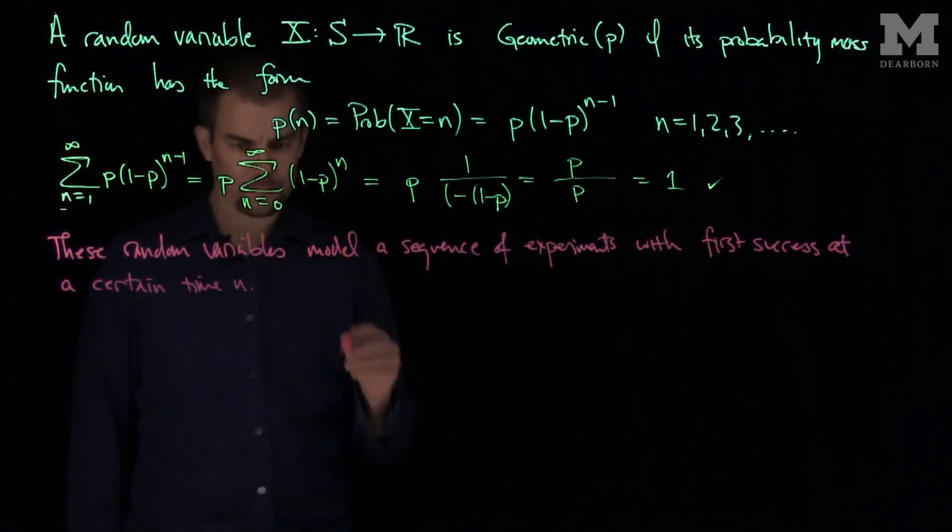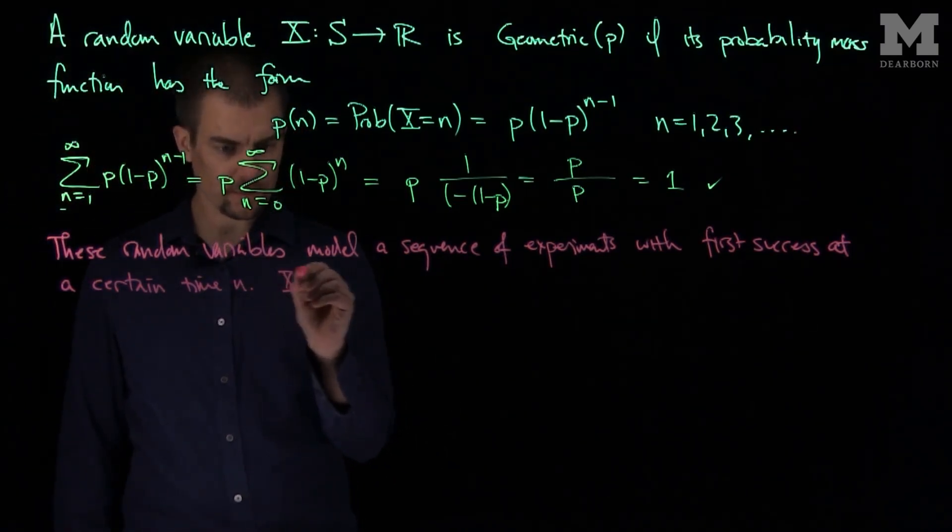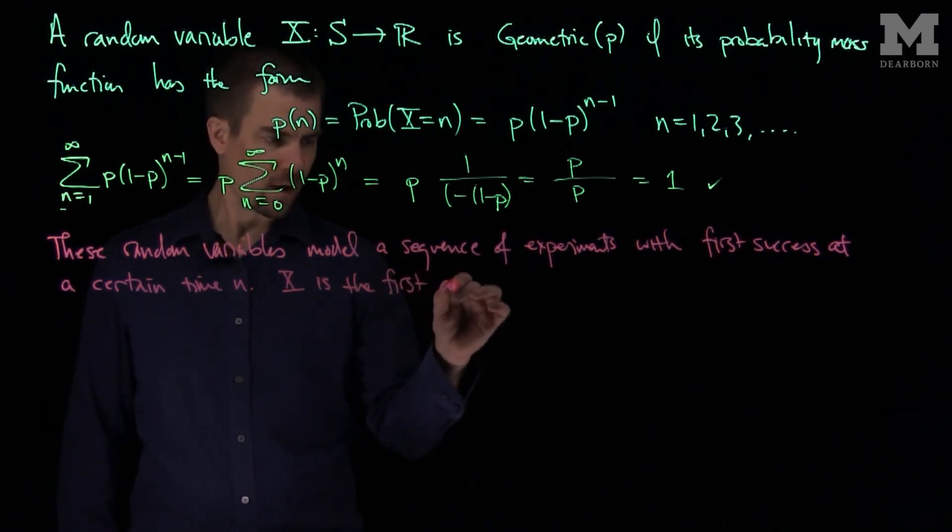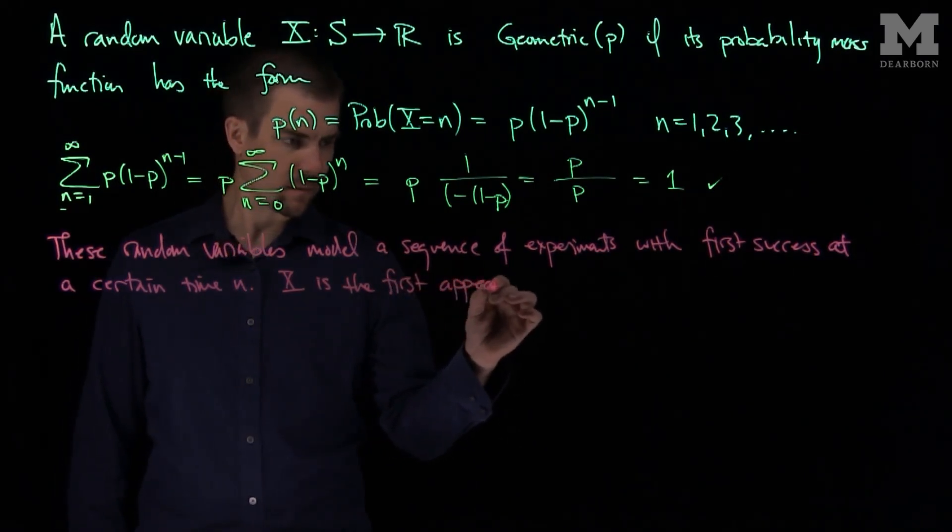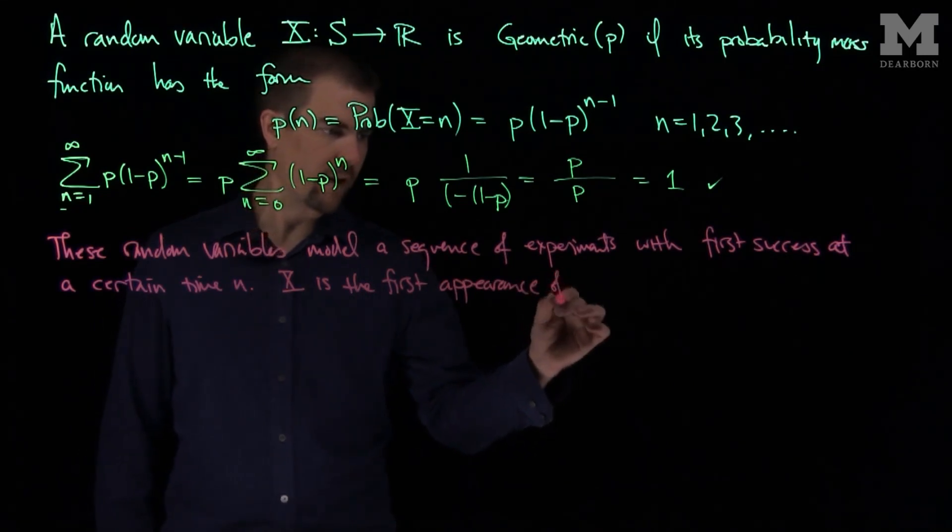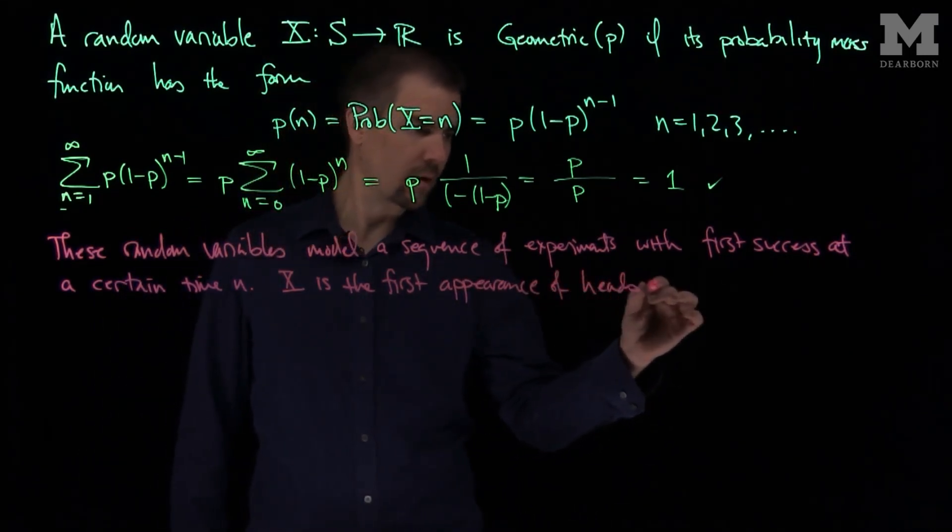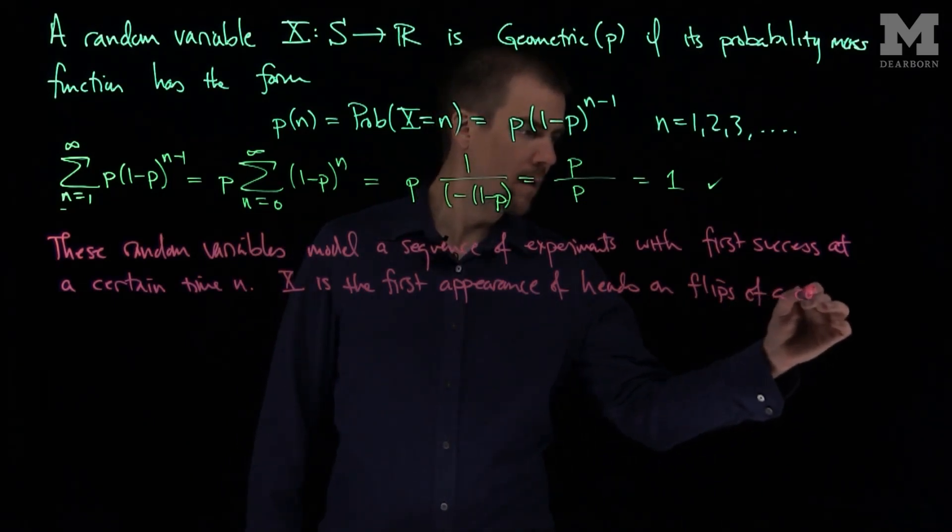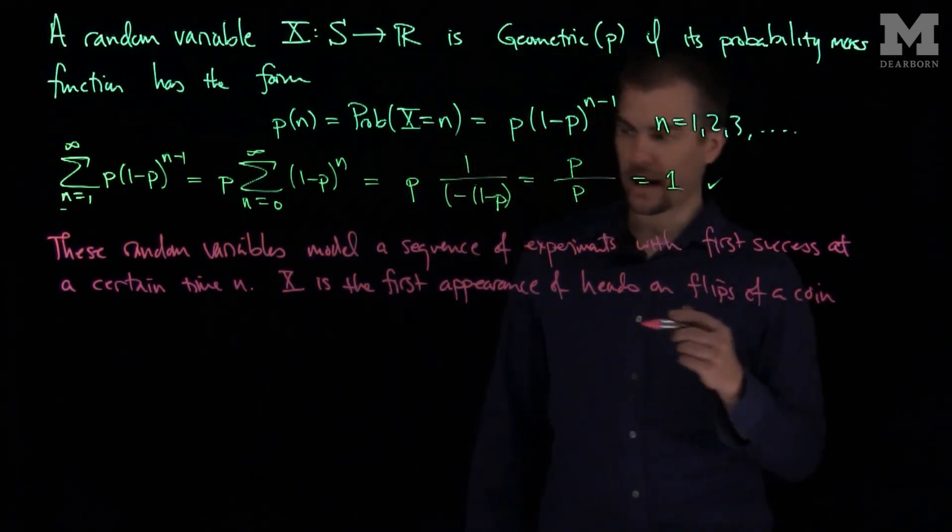So for example, if x is the first time appearance of heads on flips of a coin, then x is geometric.